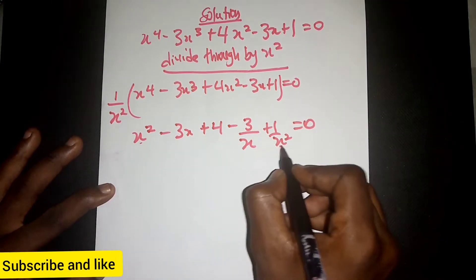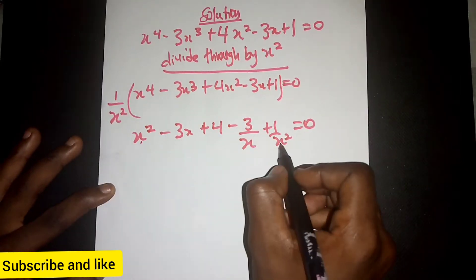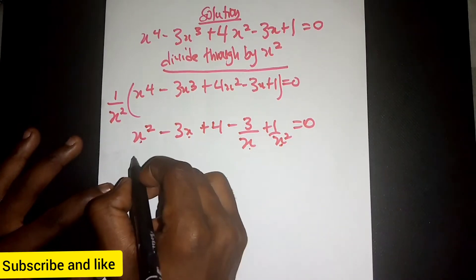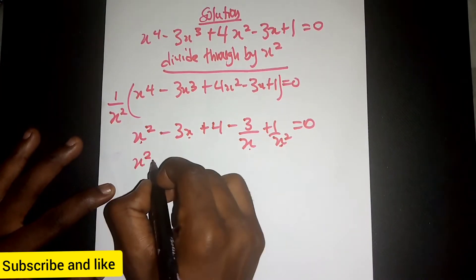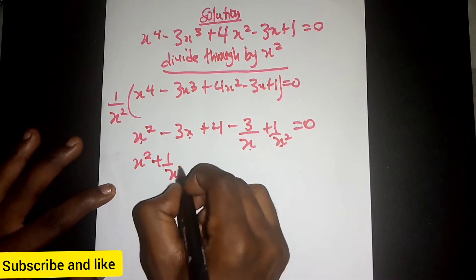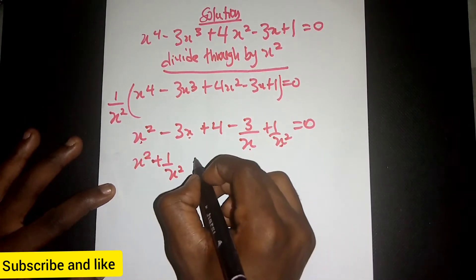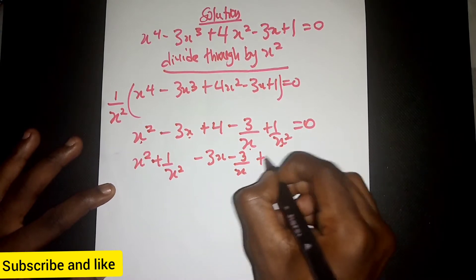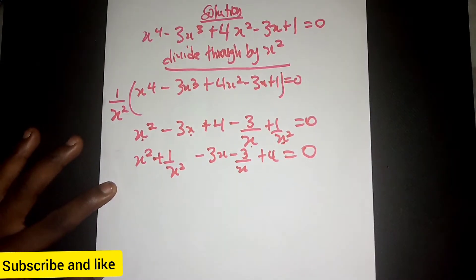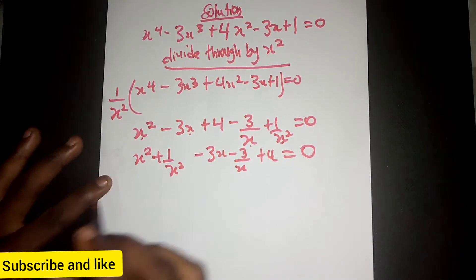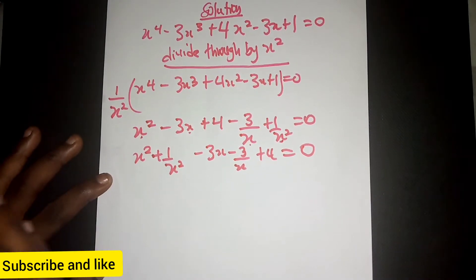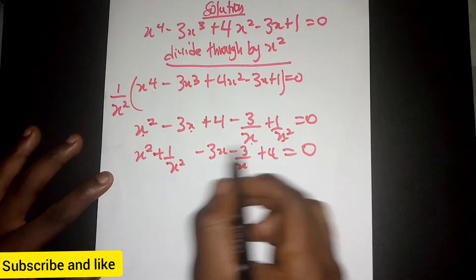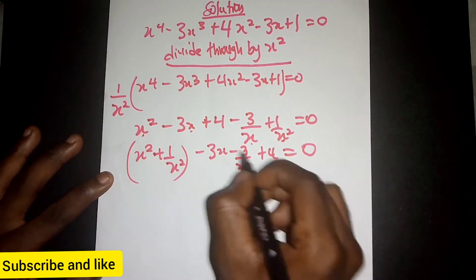We can see that we have s squared and 1 over s squared as a reciprocal pair, and we also have s and 1 over s as another reciprocal pair. So we group s squared with 1 over s squared, and also s with 1 over s, then plus 4 equal to 0.